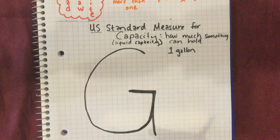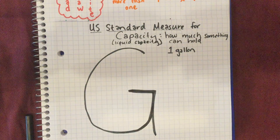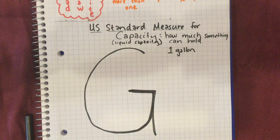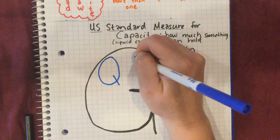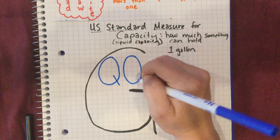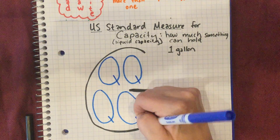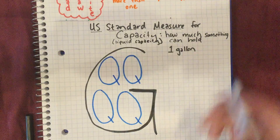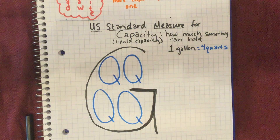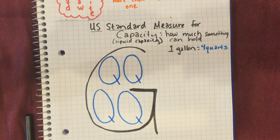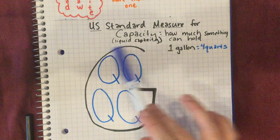One gallon can hold other units of capacity. One gallon can actually hold four quarts. We're going to draw four Q's inside the G to represent: one gallon equals four quarts. So a quart — if you have four of them, you have a gallon.